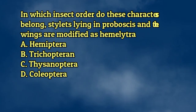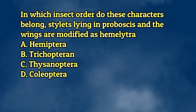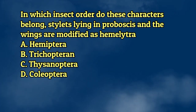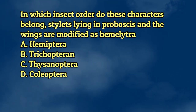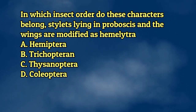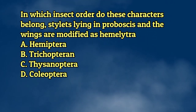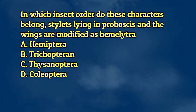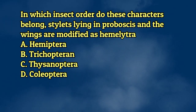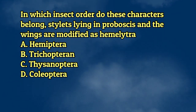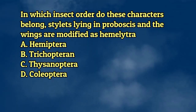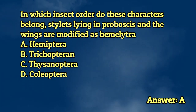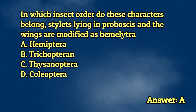In which insect order do these characters belong? Stylets lying in proboscis and the wings are modified as hemelytra. A. Hemiptera. B. Trichoptera. C. Thysanoptera. D. Coleoptera. The answer is letter A.